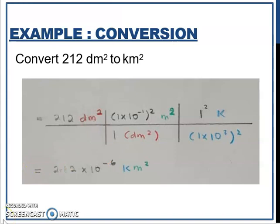Next you settle the calculation: 212 times 1 times 10 to the power of negative 2 divided by 1 times 10 to the power of 6. You will get 2.12 times 10 to the power of negative 6 kilometer square. Because the unit left is kilometer square, the final answer will be kilometer square. I think that's all for this video. In the next video we will proceed to learn about unit conversion for volume and density. That's all, thank you.